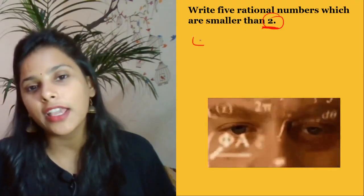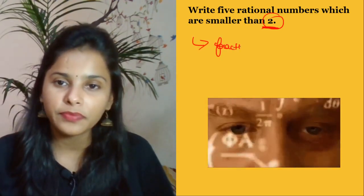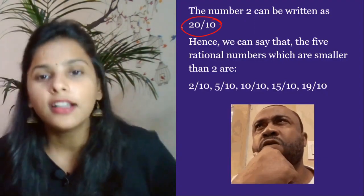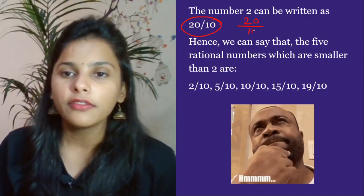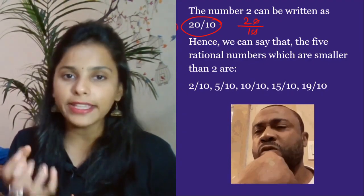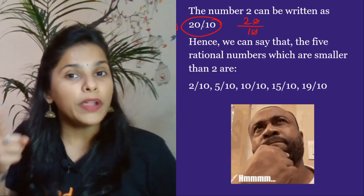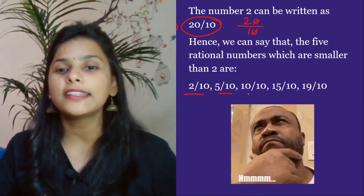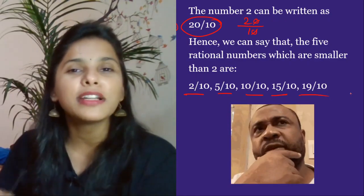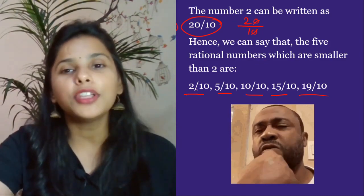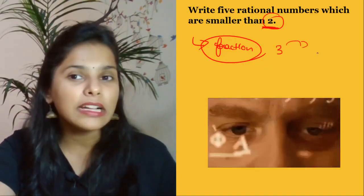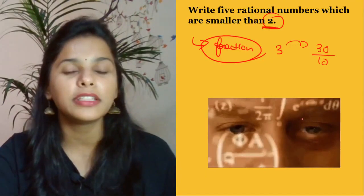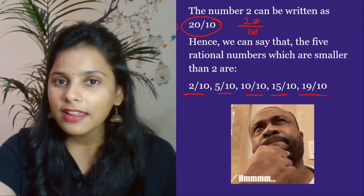The first thing is to write it in fraction form. You can write 2 as 20 by 10, which is nothing but 2 — but we now have this expanded form. So 20 by 10, 10 by 10, 15 by 10, 19 by 10. If the number were 3, you could write 30 by 10 and picking 5 rational numbers smaller than it is easy.